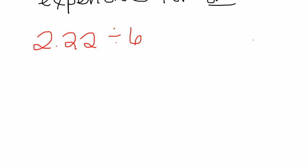So I'm going to rewrite this with $2.22 inside the box and our six on the outside. Because I'm dividing a decimal by a whole number, I can bring my decimal to the top. And now we can divide like normal.